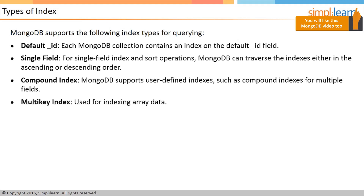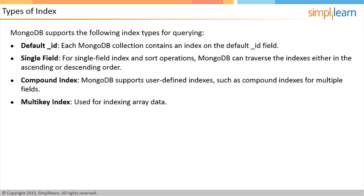Multi-key Index: To index array data, MongoDB uses multi-key indexes. When indexing a field with an array value, MongoDB makes separate index entries for each array element.